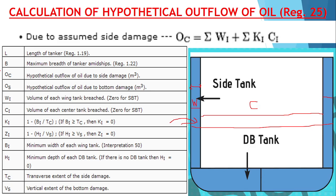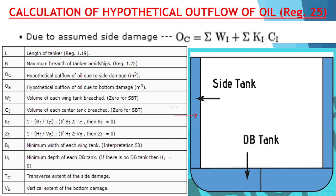C1 is the volume of the center tank. The formula for K1 is: K1 = 1 − (B1/TC), where TC is the transverse extent of damage and B1 is the minimum width of the wing tank. If B1 is greater than TC — meaning the damage does not reach the center tank — then there is no oil pollution, and K1 is considered zero.